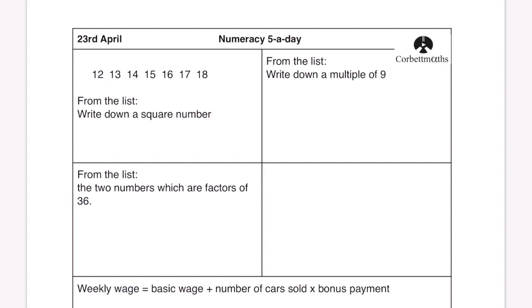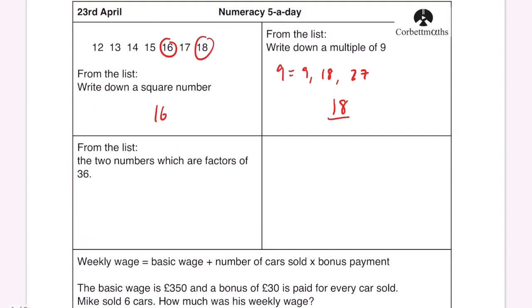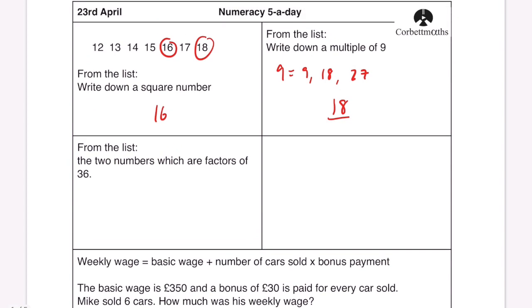So we have a list of numbers write down a square number 16 is going to be our square number there. From the list write down a multiple of nine so basically the nine times table and we can see 18 is going to be that multiple. From the list the two numbers which are factors of 36 will be 12 because 12 times 3 and 18 because 18 times 2.